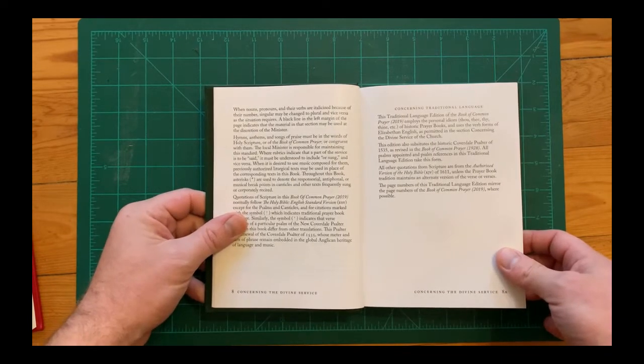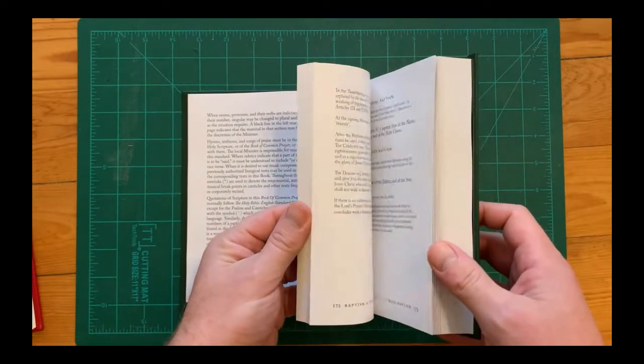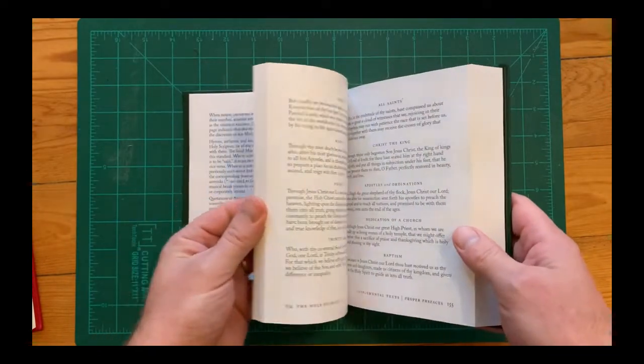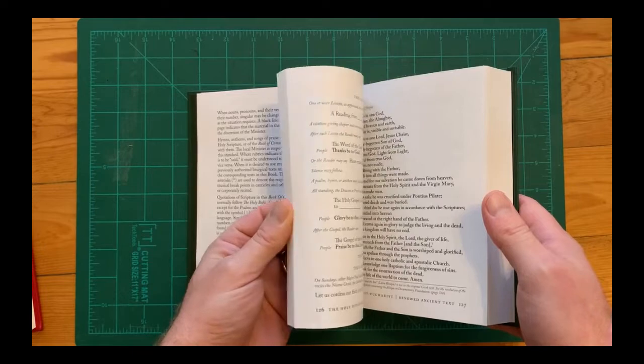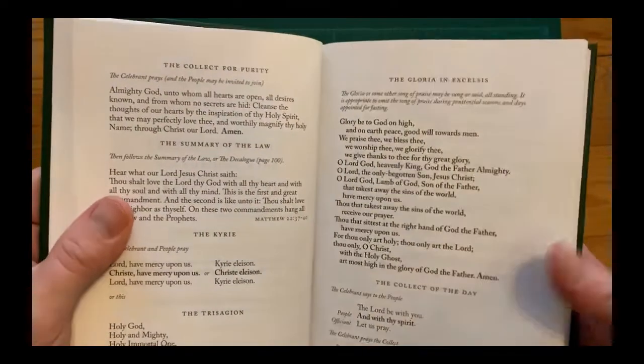So where there was a traditional prayer already in Elizabethan English, such as the Gloria in Excelsis in the Eucharistic Liturgy, the Gloria in Excelsis from the 1662 was just copied and pasted right in, and so it's the familiar text.